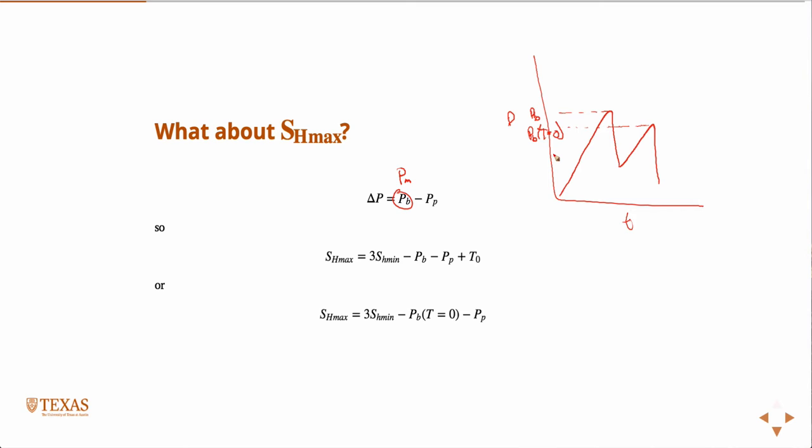So the second loading cycle, this pressure drop is just when you're opening the fracture that's already existing. So in this case, if you can identify this PB, then you can assume T equals zero and the equation reduces to this. So then you only need to know SH min, the pore pressure—if you can identify this guy, then you can, at least according to the equations, determine what SH max is.